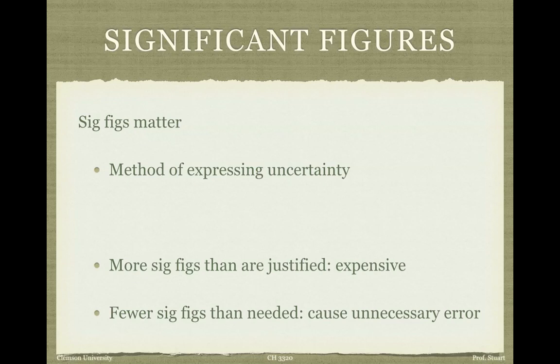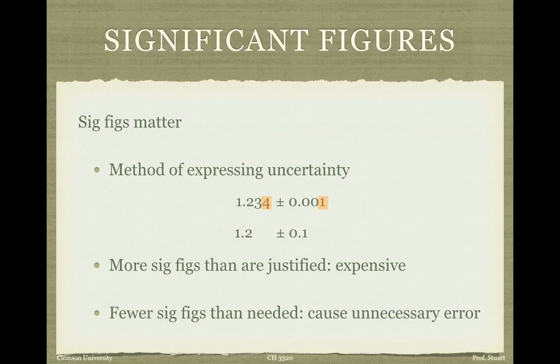The basic idea of sig figs is that they're a way of expressing the certainty or uncertainty in a number. For example, if you have the number 1.234, the fact that you've given three digits past the decimal implies you know that number to three digits past the decimal — that third digit past the decimal is the last one in which you're certain. Likewise, if the number is just 1.2, you're implying that you only know it to one digit past the decimal.